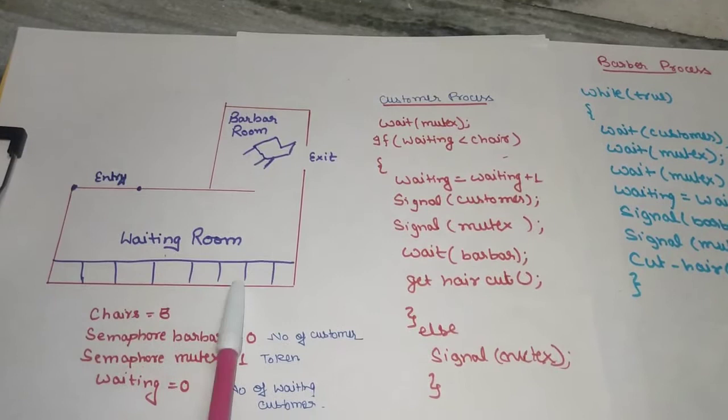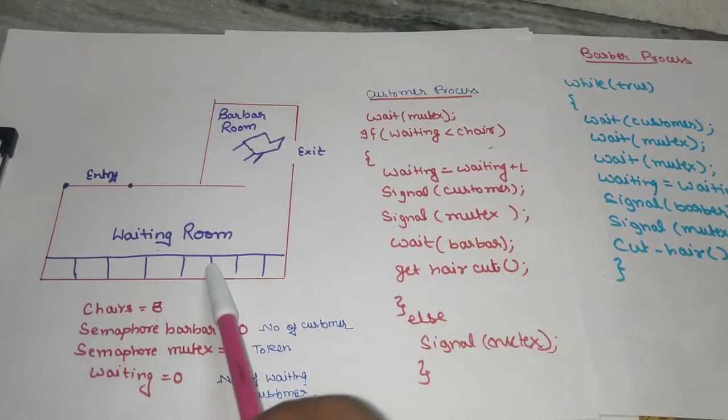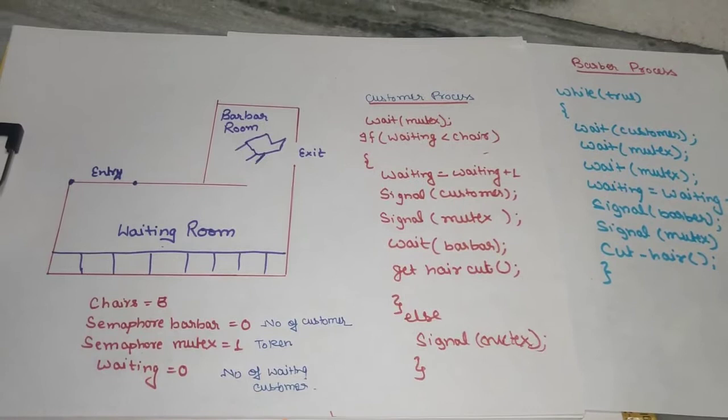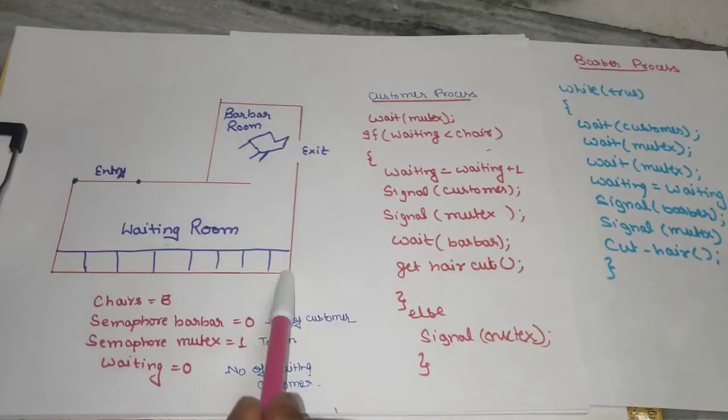Barber operates in FIFO order. He will pick one customer and perform the work or haircut. But here there is a problem with synchronization because the shared data item is the waiting room between the customer and barber processes.